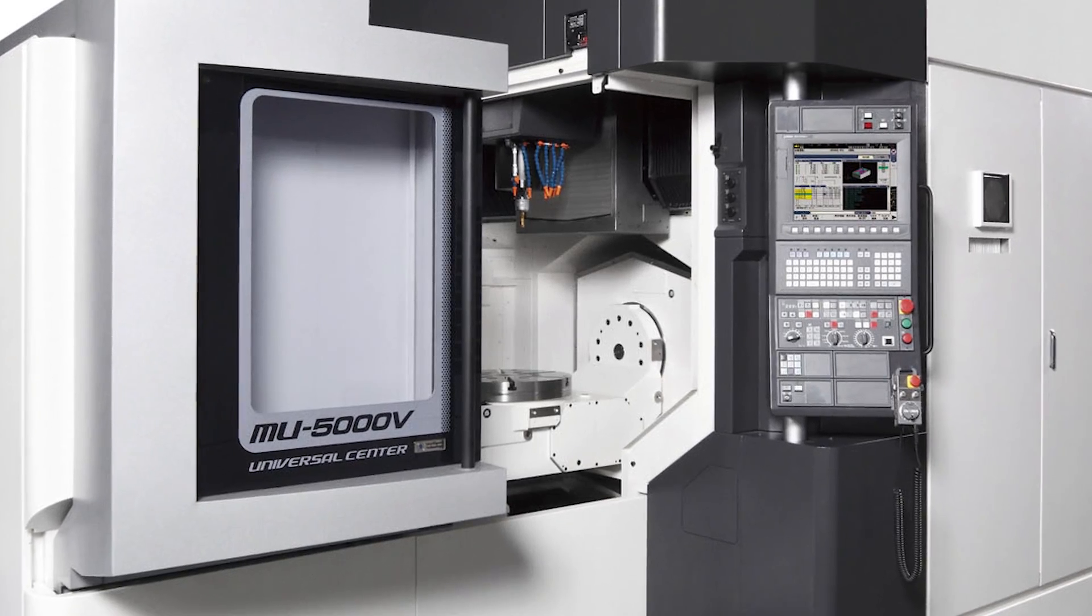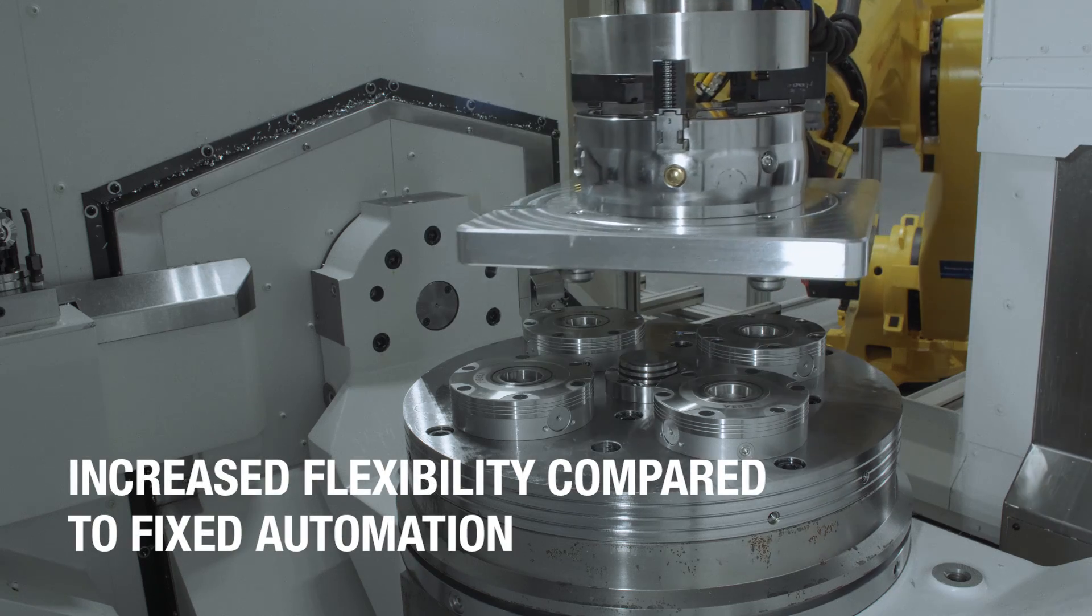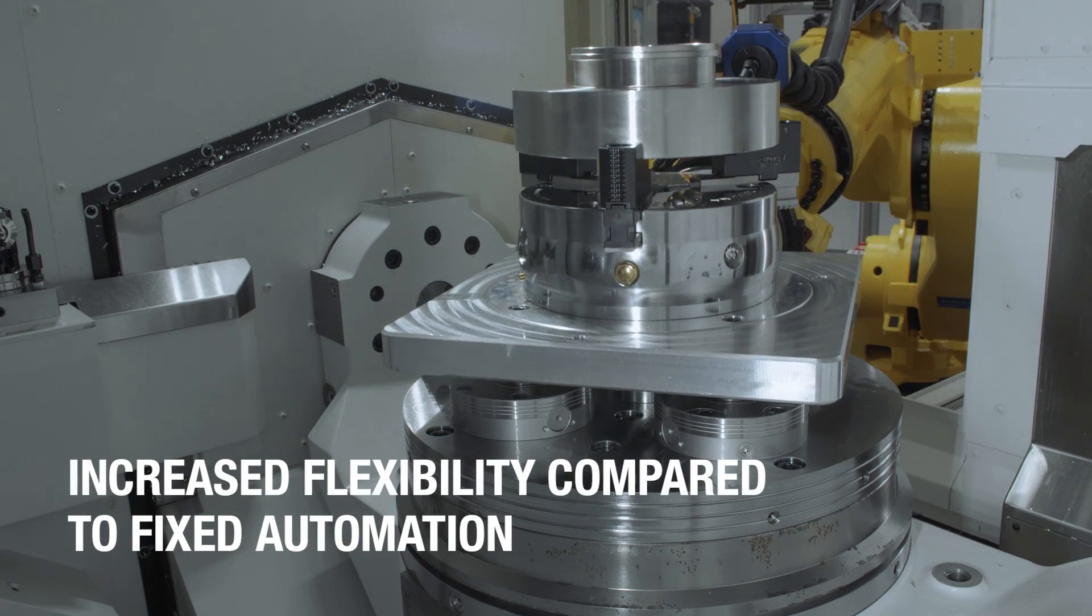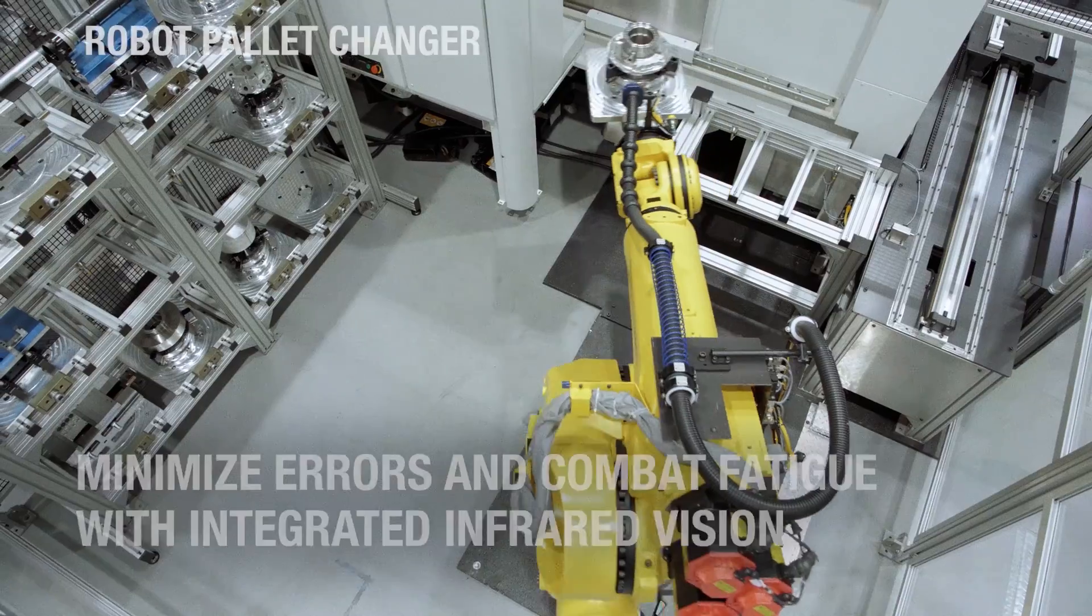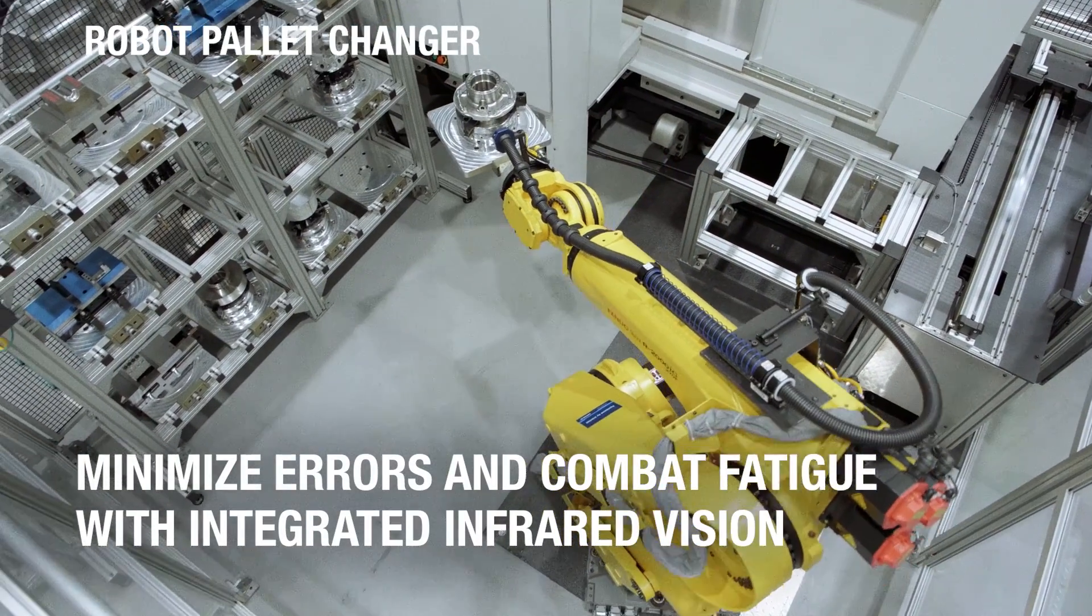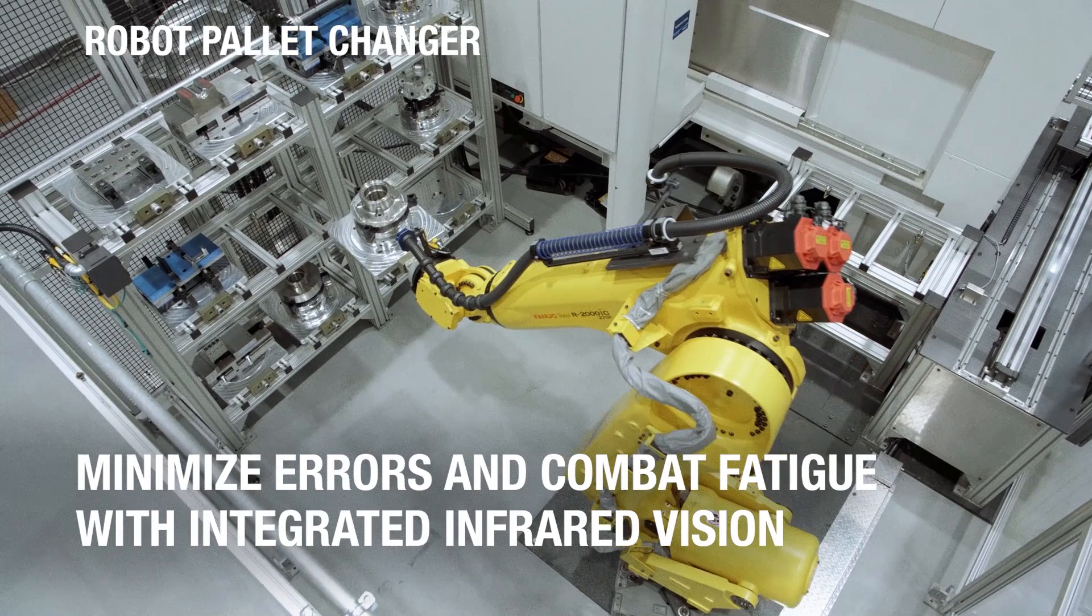Machine load and unload, part orientation, part turnover, deburring, self-setup - integrated standard and collaborative robots can perform these cell-related tasks, all for the sake of optimizing throughput and system uptime.